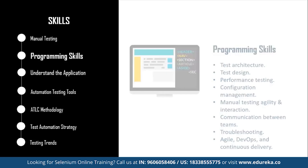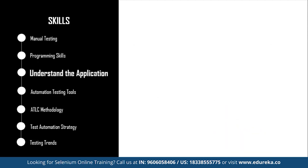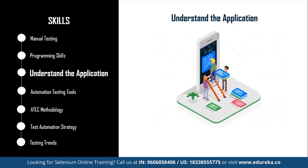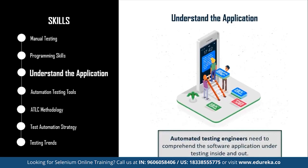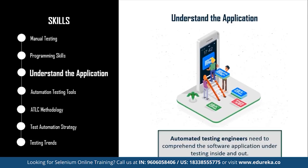Next is understanding the application. The common application details every automation tester needs to consider include: which programming languages were used to develop the application, on what platform the application is built, which databases are involved, whether there are any web services or APIs connected to different parts of the system, and many more such questions. These are just a few points and may vary based on the complexity of the application, so make sure you are completely thorough with the application you are going to test.